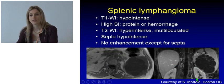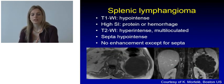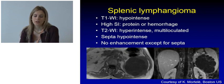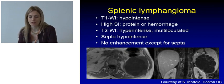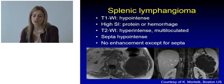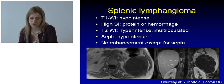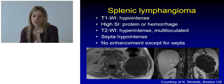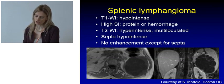At MRI, lymphangiomas are going to be hypo-intense on T1-weighted images, though they can be hyper-intense if there is protein or hemorrhagic content. On T2-weighted images they are going to be hyper-intense and we can better appreciate the multi-loculations. The septa are hypo-intense and can show some enhancement after contrast administration.